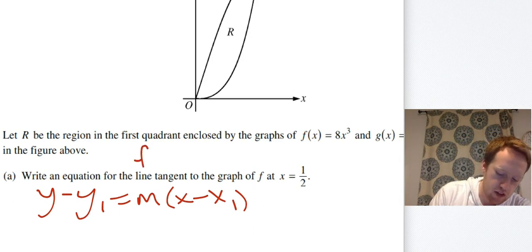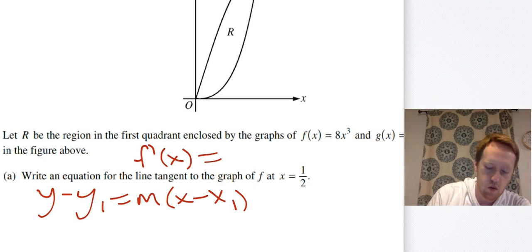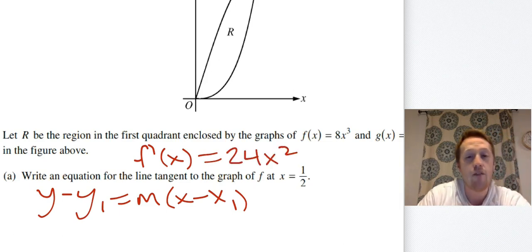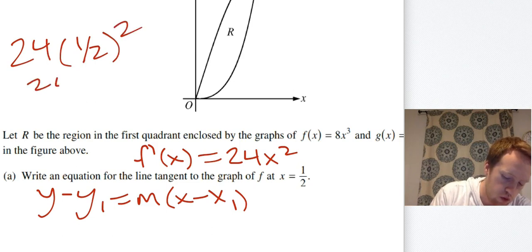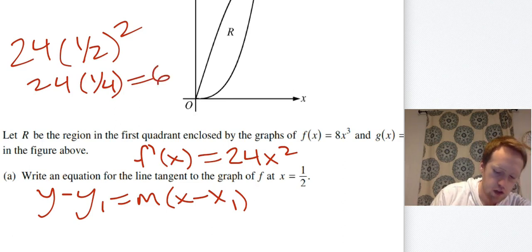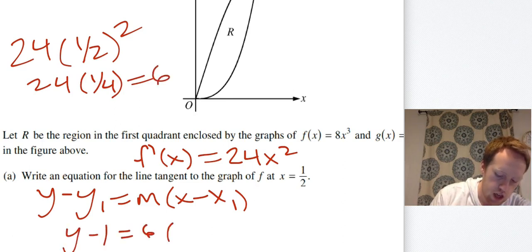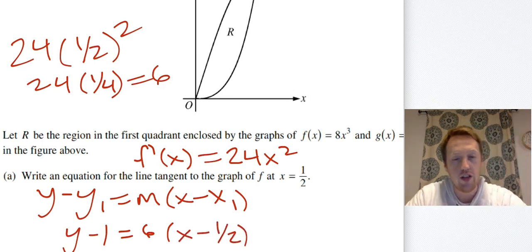We find f′(x) to get the slope. The derivative of 8x³ is 24x². Plugging in x = 1/2: 24 times (1/2)² = 24 times 1/4 = 6. So the tangent line equation is y − 1 = 6(x − 1/2).